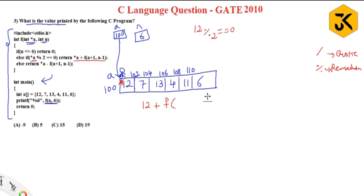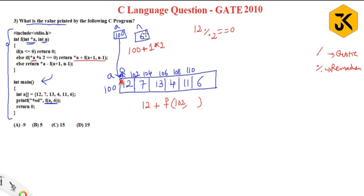So what is star a? Star a is 12. Plus f(a+1): what is a? 100. 100 + 1 in pointer arithmetic means 100 + 1*2 = 102. So it calls f(102, n-1). n is 6, so n-1 is 5. Now f(102, 5) is called. Now a is 102 and n is 5; the previous link is broken and it points to the next element.